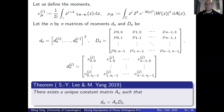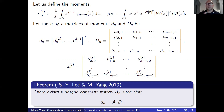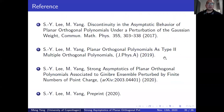In summary, today I talked about how to obtain the strong asymptotics for orthogonal polynomials and multiple orthogonal polynomials, and also about the partition functions. The first three references can be found online, and the last one is not yet finished. Thank you for your attention.